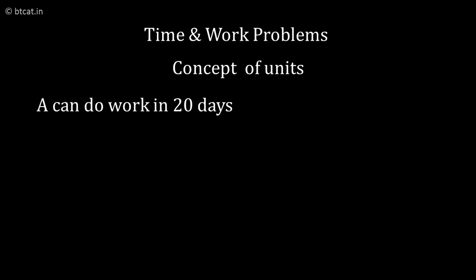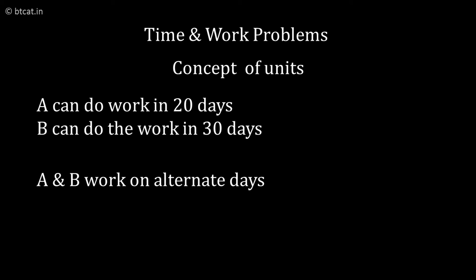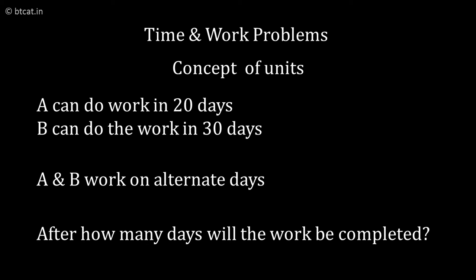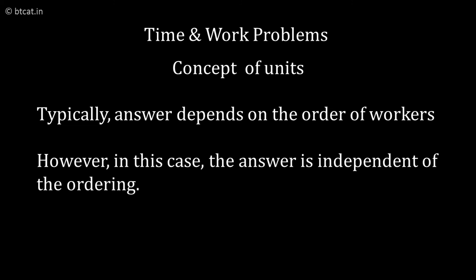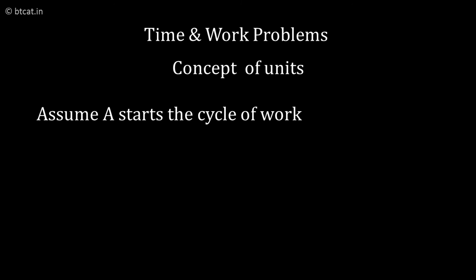Let us take one example which is the concept of alternate days. A can do a piece of work in 20 days, B can do in 30 days, and they both work alternately - one day A comes and another day B comes. After how many days will the work be finished? In this case we are not given who starts the work. In some cases the answer can be cannot be determined because it will depend on who has started. But in this particular case of 20 days and 30 days, the answer will come same irrespective of whosoever starts.